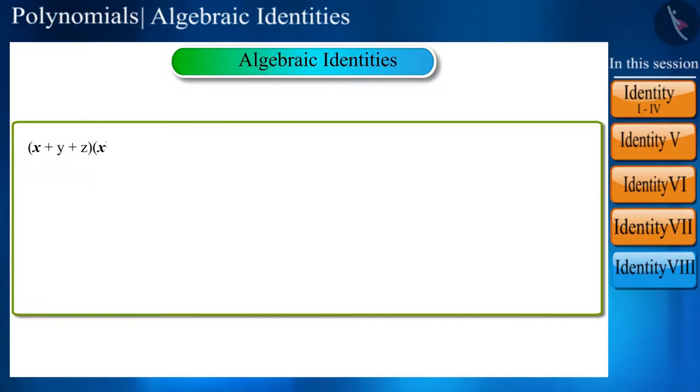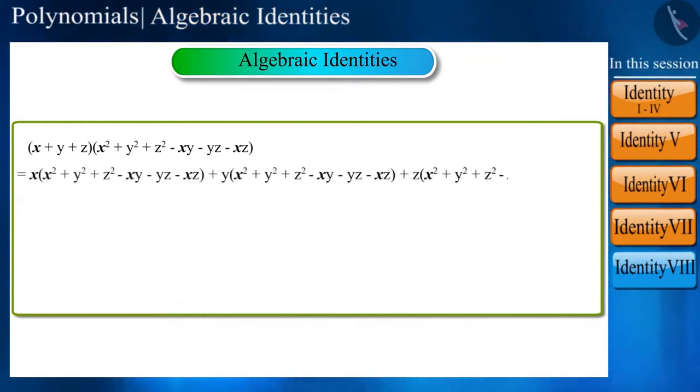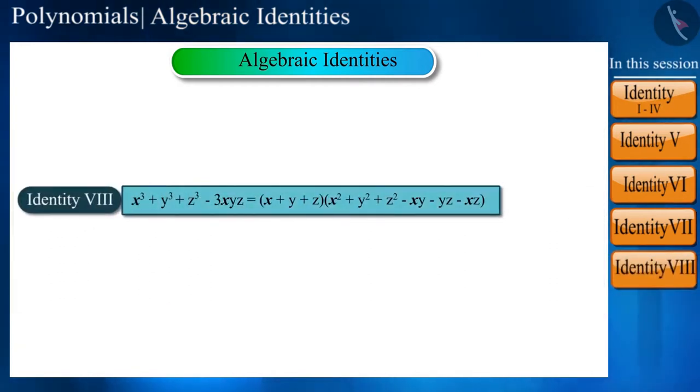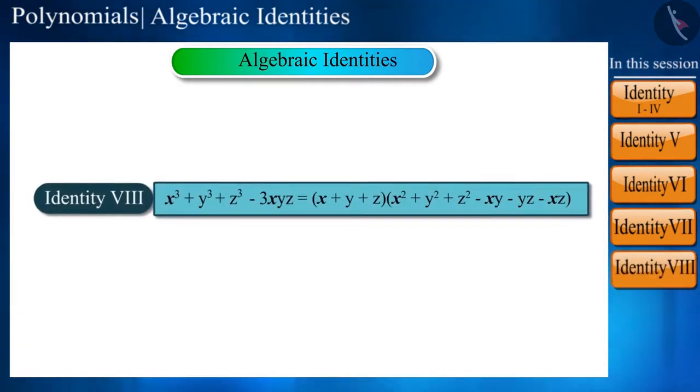And now let's move towards the last identity of the session: (x + y + z)(x² + y² + z² - xy - yz - xz). It looks a bit different in its extended form. After this step, some terms cancel each other, leaving only x³ + y³ + z³ - 3xyz. This is our Identity 8.